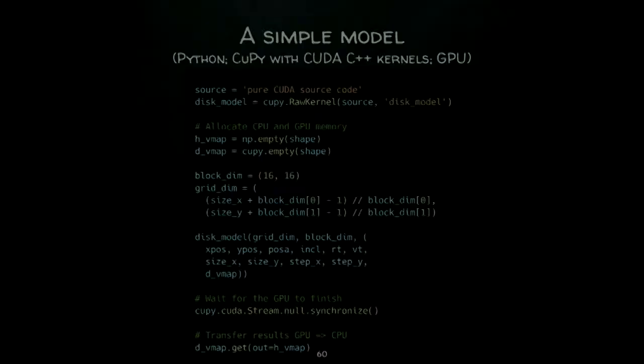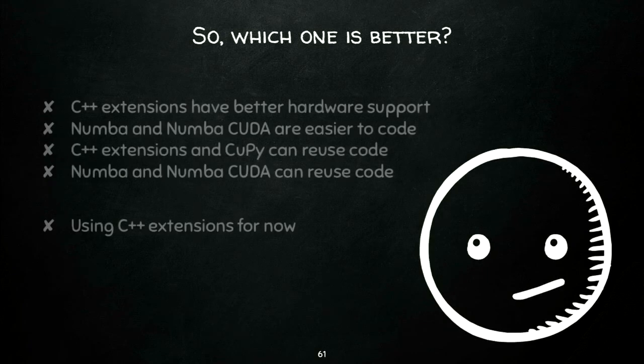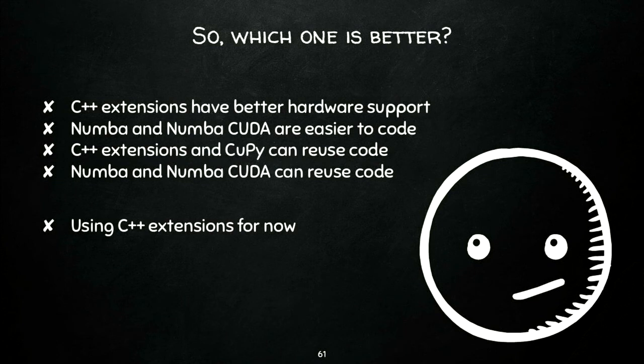I said many things and which one is better? I don't know. C++ extensions have wider support for hardware. Numba is easier to write. C++ and CuPy can reuse the same code. Numba and Numba CUDA can reuse the same code. For now, I'm using C++ extensions, but I don't know if that would be forever.